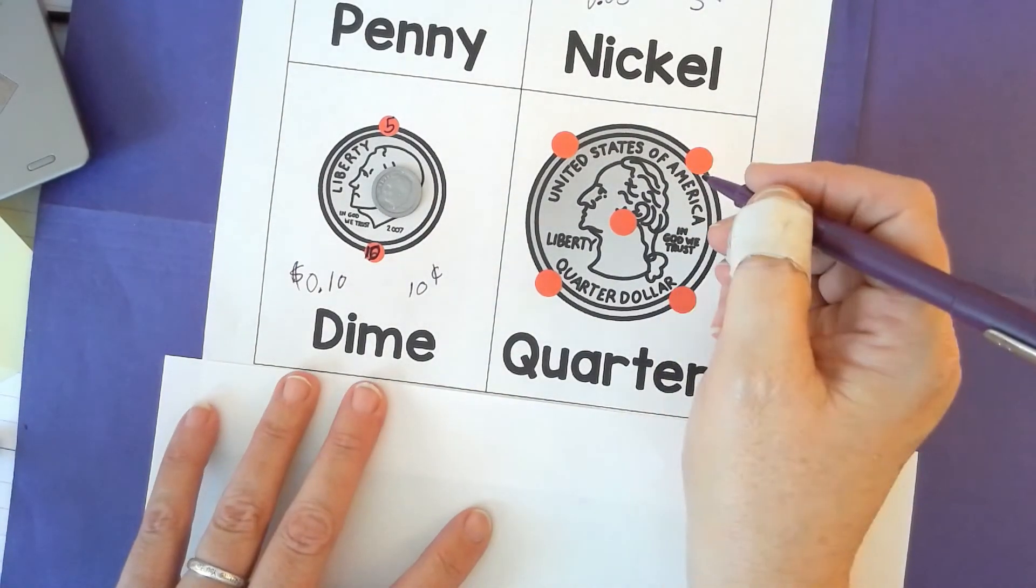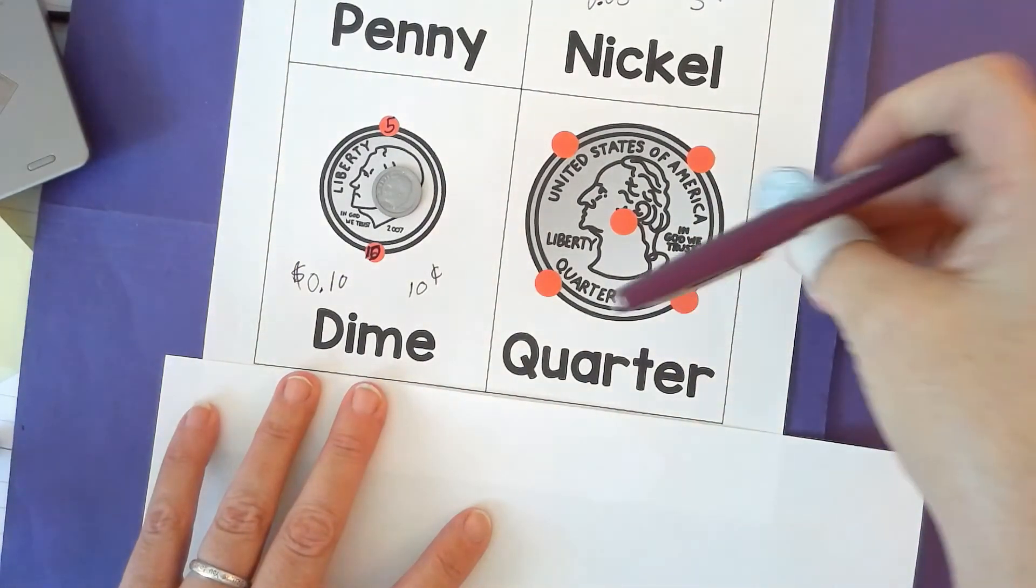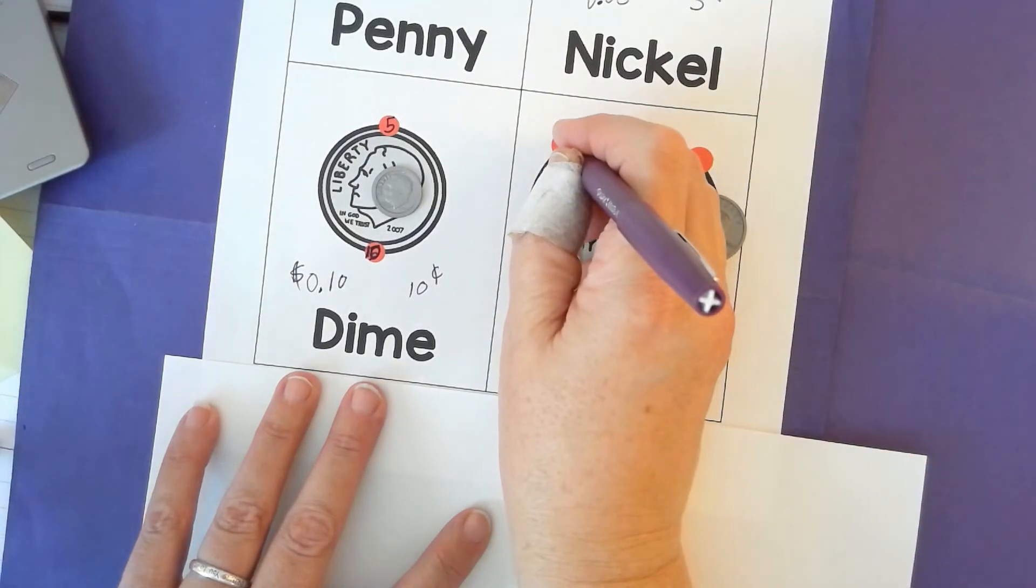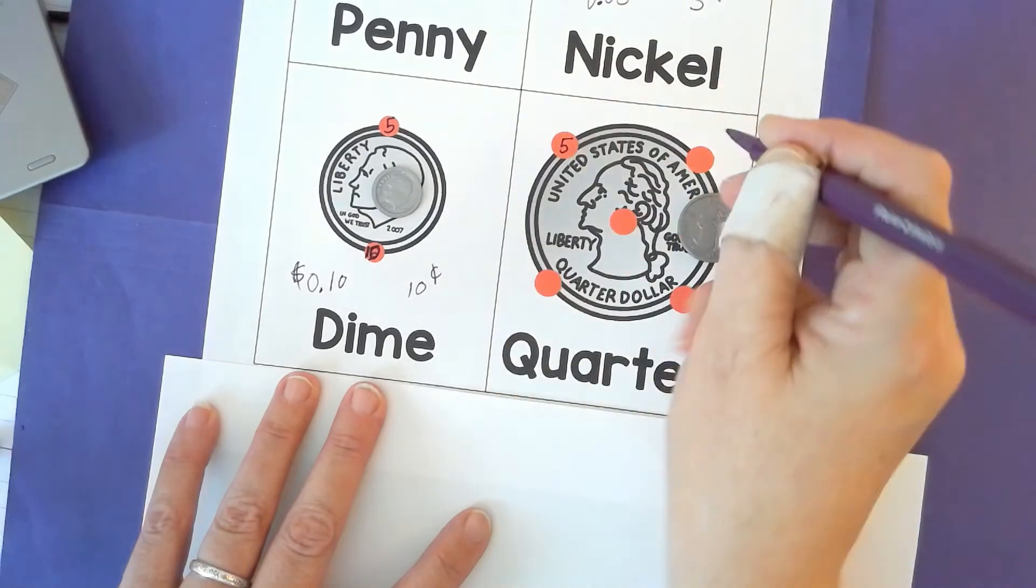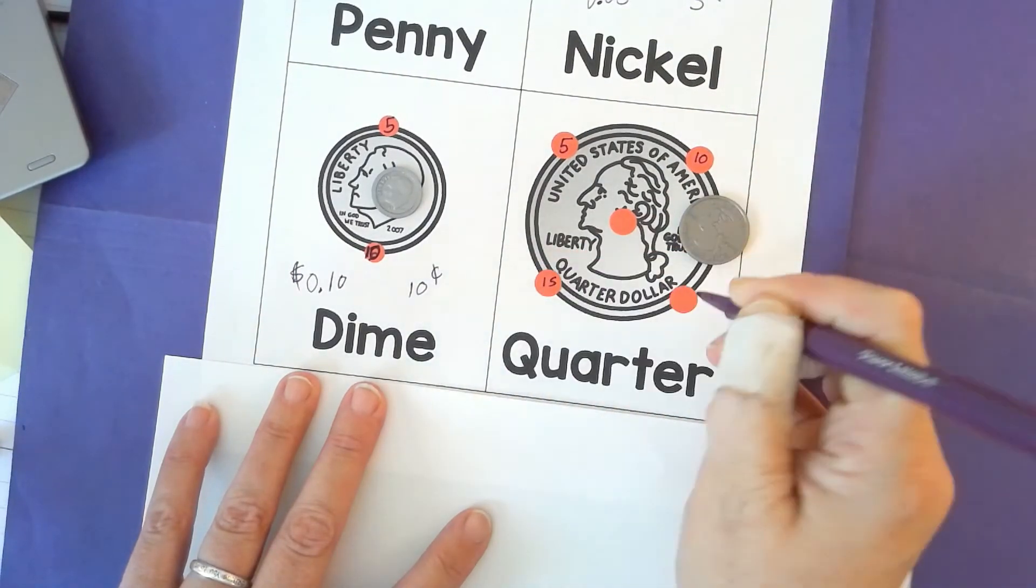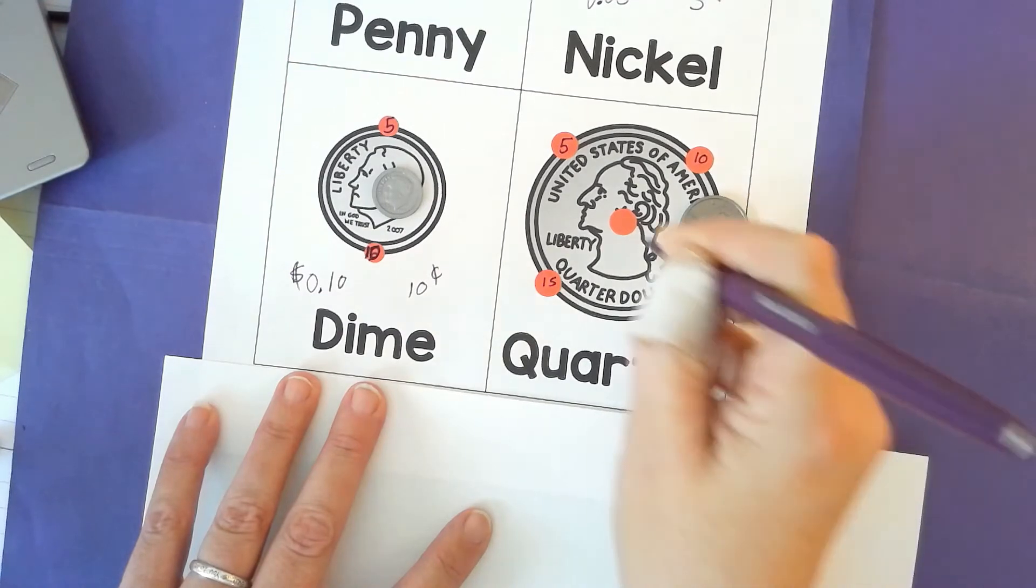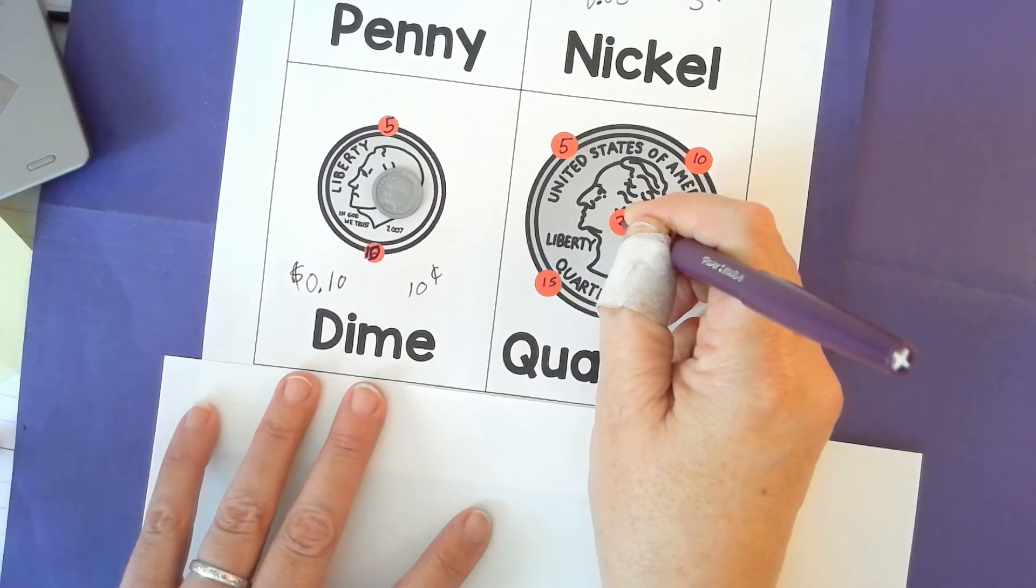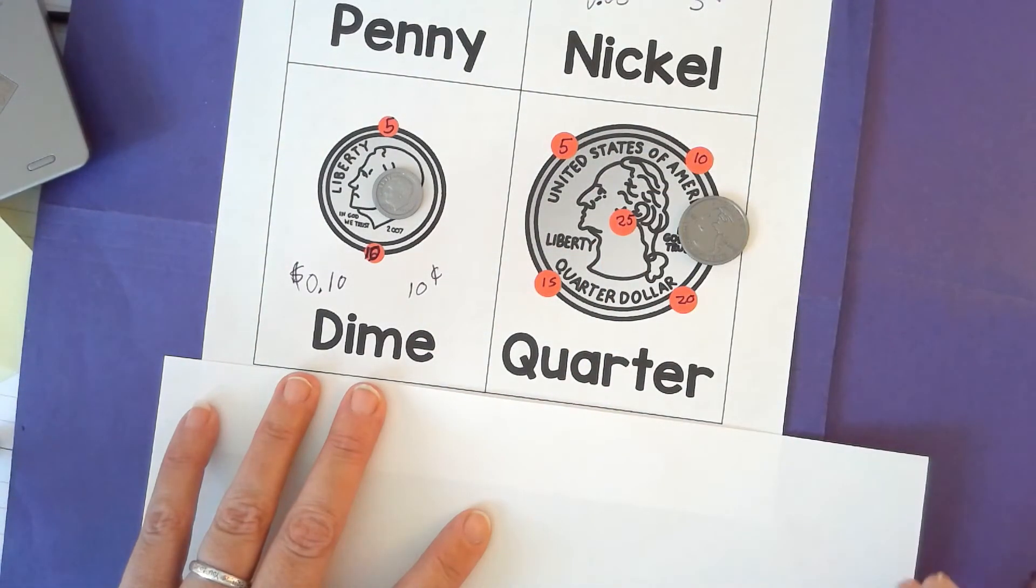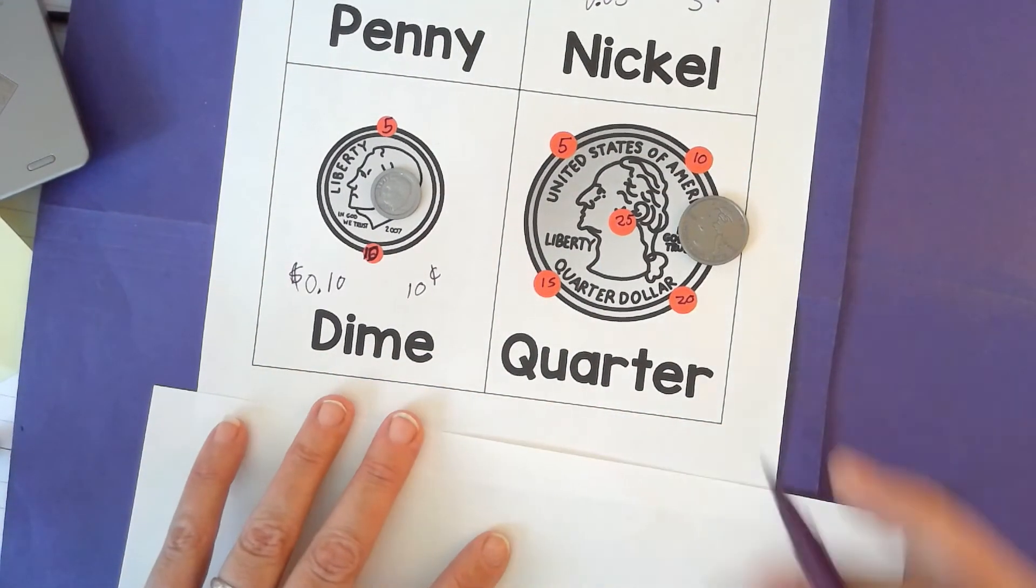Now for the quarter, which looks like this, you would start it by saying five, five, 10, 15, 20, 25. So five, 10, 15, 20, 25. That's how you would count a quarter.